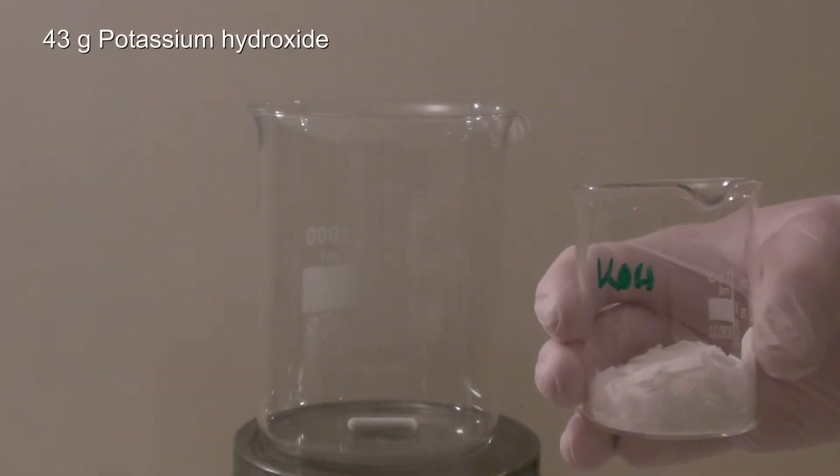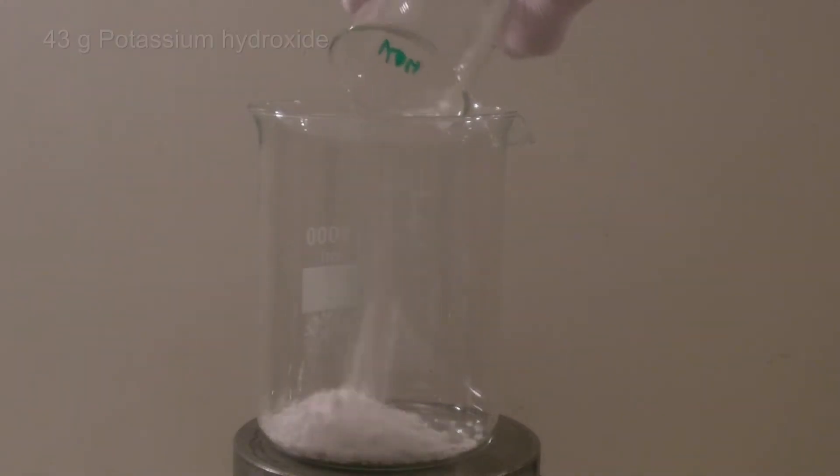43 grams of potassium hydroxide were added to a beaker and dissolved in 390 milliliters of distilled water. This gives a 10% solution of potassium hydroxide. It was then stirred until the hydroxide had dissolved.